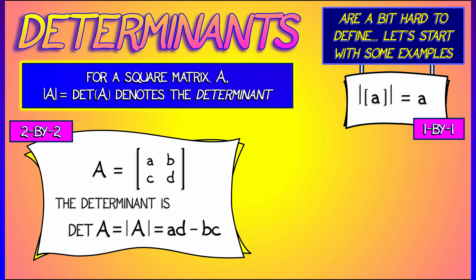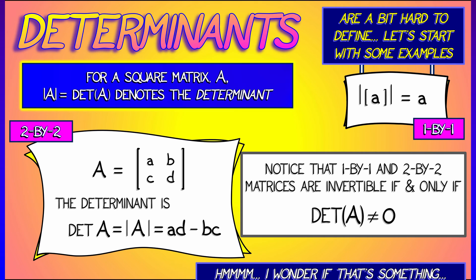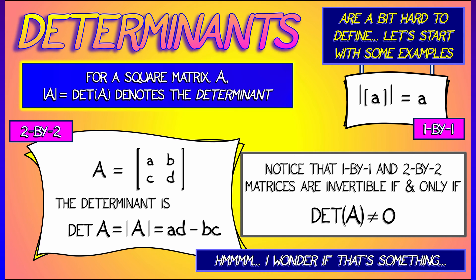Okay, now wait a minute. I've seen that before. That showed up in the definition of the inverse. Remember, that was down in the denominator. And what that means is that a two-by-two matrix is invertible if and only if the determinant is non-zero. Hmm, I wonder if that's something.